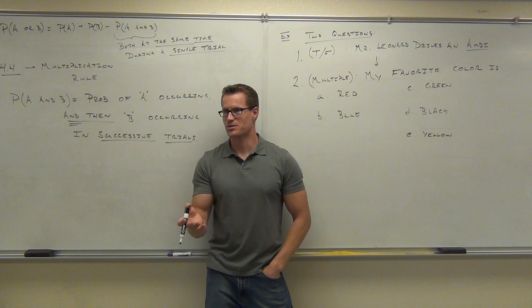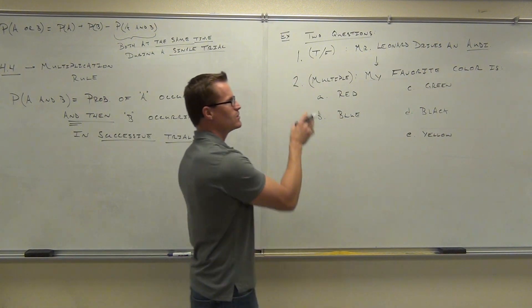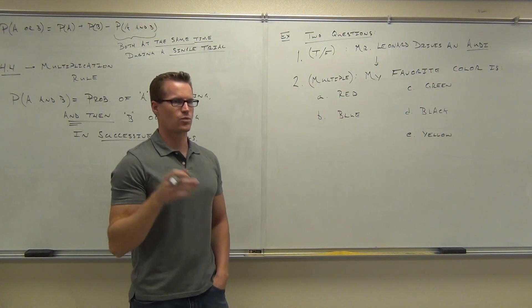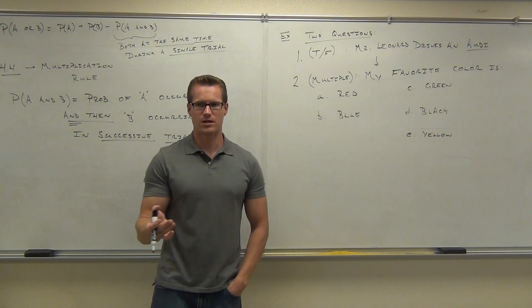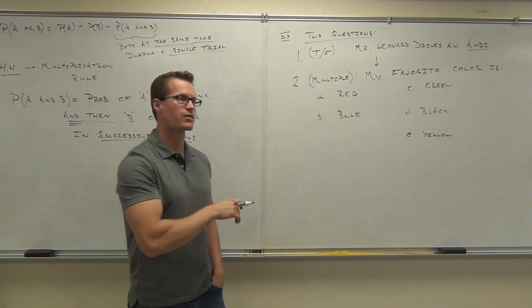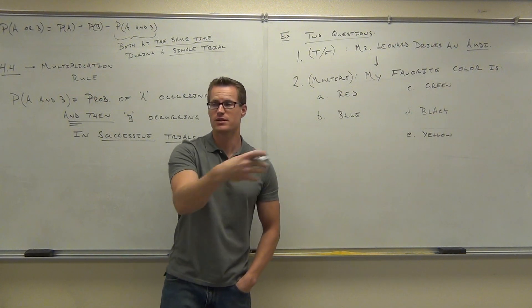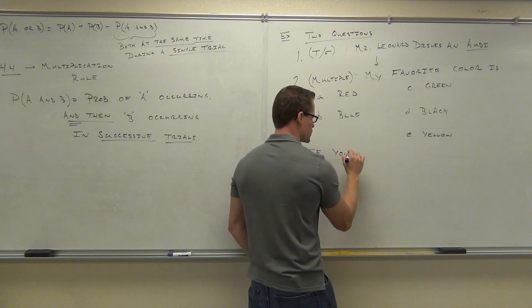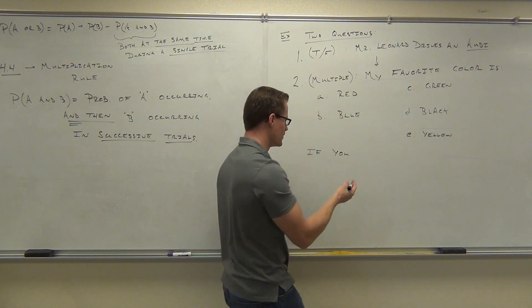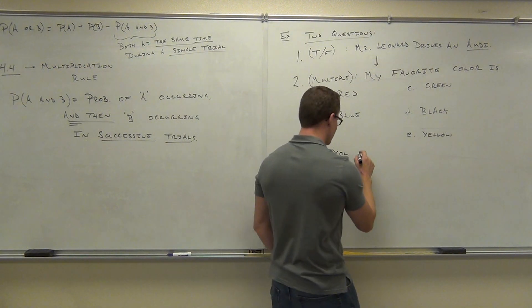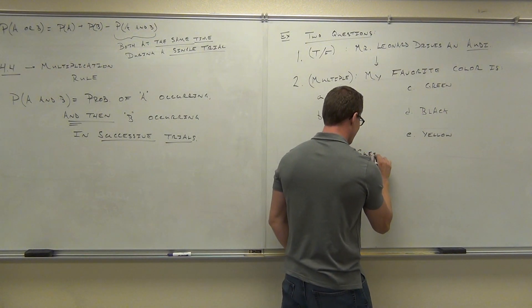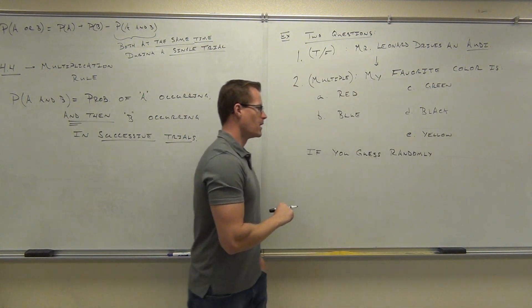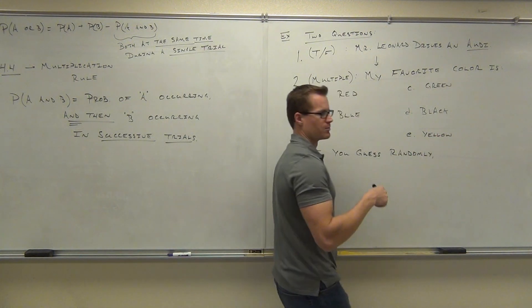Let's pretend you didn't know the answers to these questions. Let's say you didn't know whether or not I drive an Audi, and you didn't know what my favorite color is, and you're going to take a random guess. What I want to know is: if you guess randomly, what's your probability of finding the right answer on both questions? That's going to lead us into the multiplication rule.